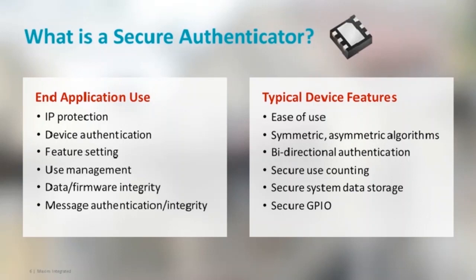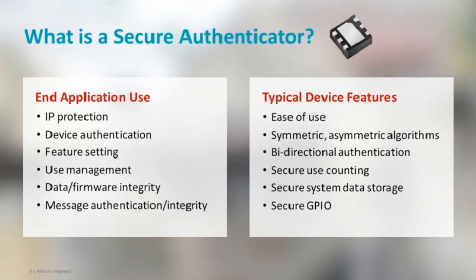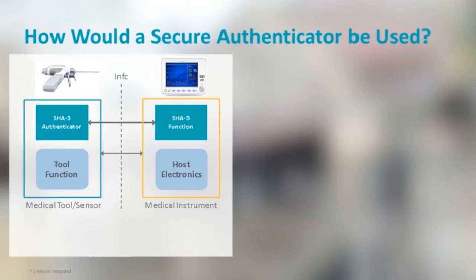Typical secure authenticator device features: very easy to use, which is probably the most important. These products are fixed function in nature — there's no firmware developed and flashed into these devices by the customer. They have a fixed function command set and a nice cryptographic toolbox for this sort of application. Cryptography comes in two classes: symmetric, also known as secret key, or asymmetric, known as public key. We support both algorithm types. Bidirectional authentication, secure use counting, secure system data storage, and secure general purpose I/O for turning things on or off and sensing state.